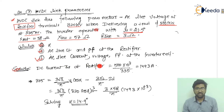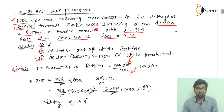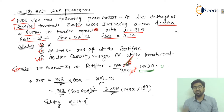DC current ID at the rectifier side is simply power divided by voltage. Power is 500 megawatt and voltage is 335 kilovolts, so ID = 500×10⁶ / 335×10³. After simplification, that is 500/335 multiplied by 1000, giving us 1493 amperes.